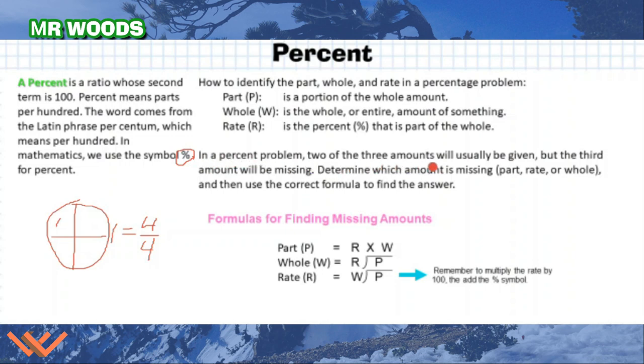In a percent problem, two of the three amounts will usually be given. But the third amount will be missing. Determine which amount is missing, part, rate, or whole. And then use the correct formula to find the answer. So the rate, that is the percent. And if we look at this here, formulas for finding missing amounts. I have my part. If I'm looking for the part, it's equal to the rate times the whole. The whole is the rate, or I'm sorry, the part divided by the rate. And the rate is the whole here, or rather the part divided by the whole. And remember to multiply the rate by 100, then add the percent symbol.